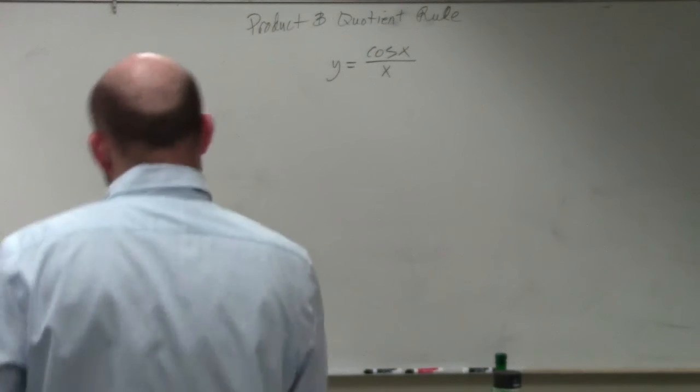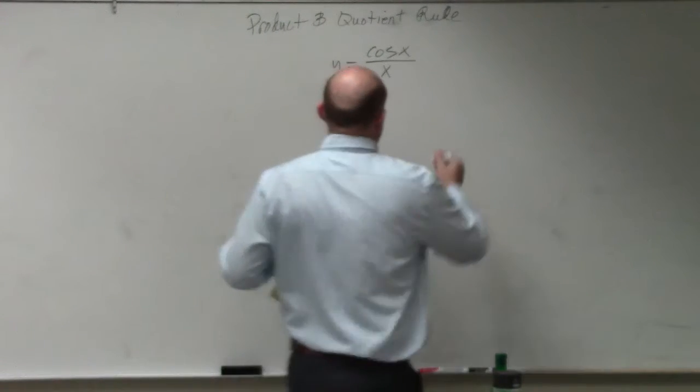Just a little bit more and I'm almost done. So in this case, we have y equals cosine of x divided by x.